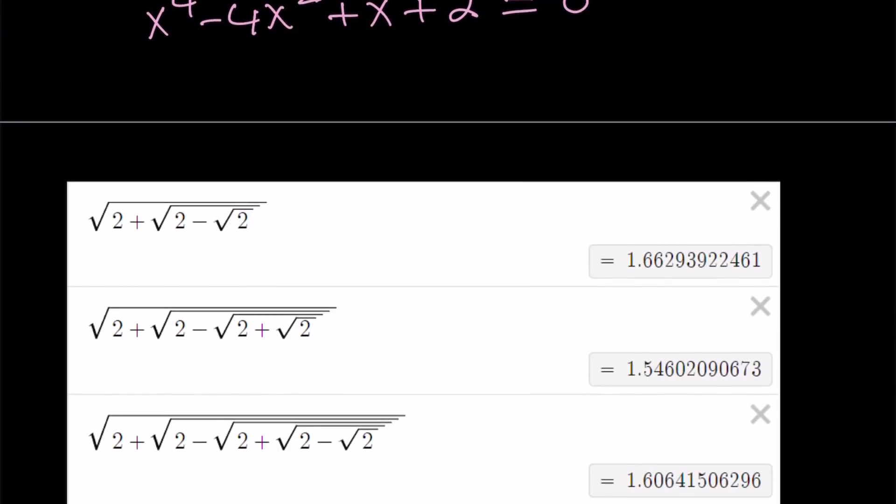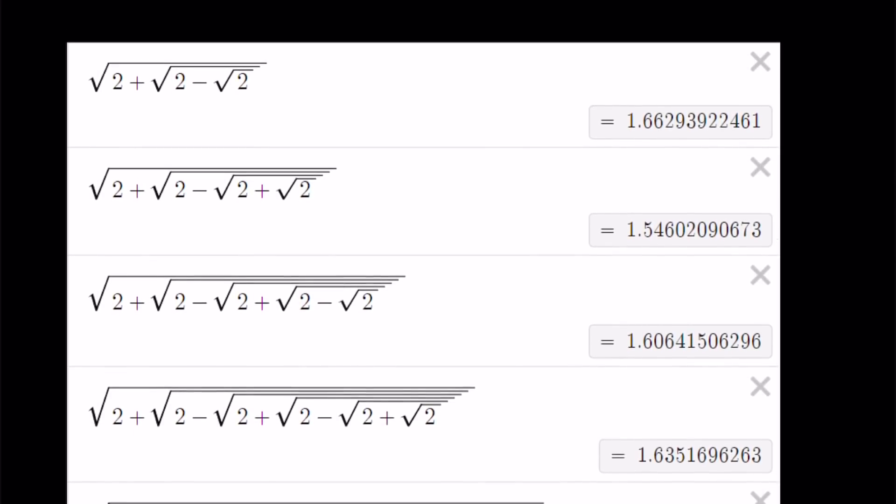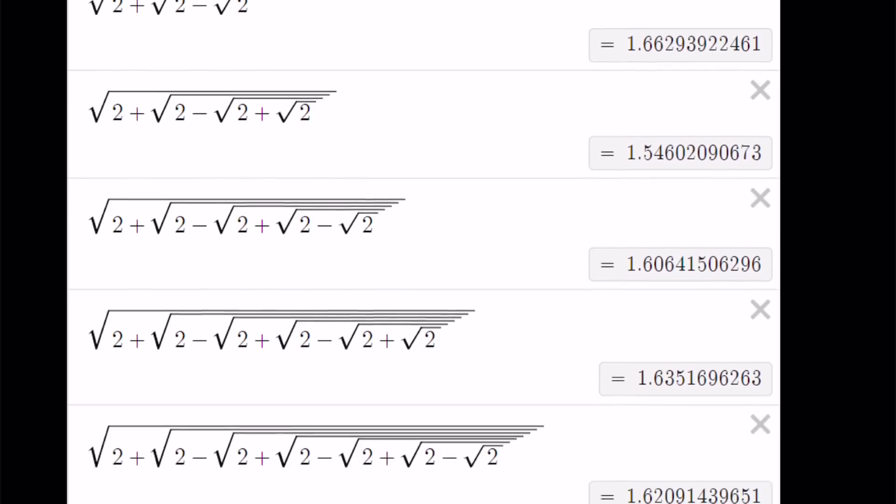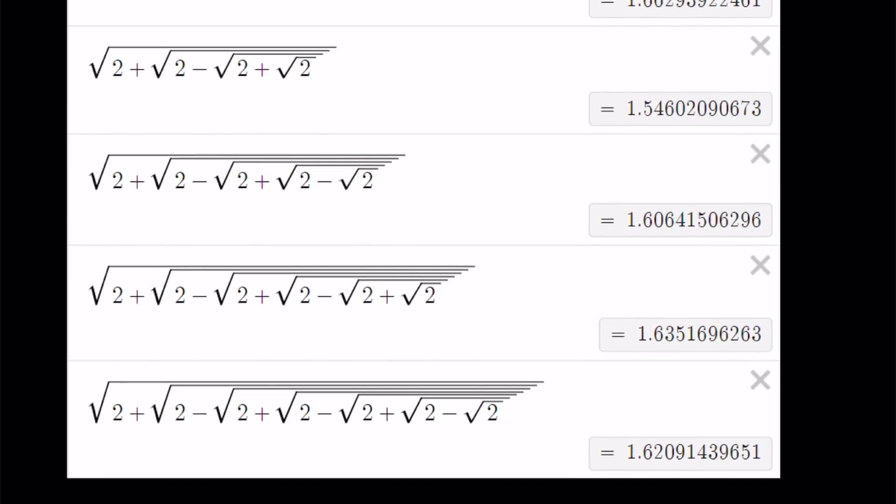So here's some numerical values that we get from looking at this infinite radical. So if you just expand a little bit like square root of 2 plus the square root of 2 minus square root of 2, you get something like 1.66. Does that give you an idea? But if you continue, you're going to get something like 1.546, 1.606, 1.635, 1.62091. So what happens here is that the values get smaller and then larger and then larger and then smaller. It kind of goes back and forth because of the plus minus signs.